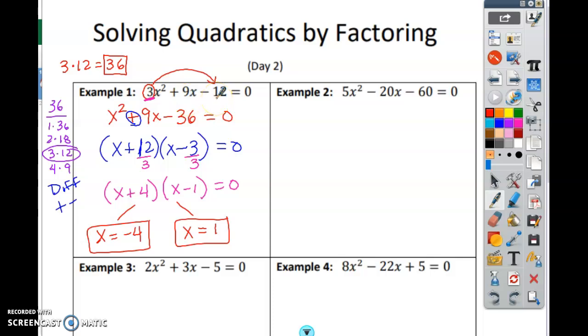Just like all of these have a GCF of 5. This one can be divided by 5, 20 can be divided by 5, and 60 can be divided by 5. So I can start off by taking out a 5. So divide everything by 5.